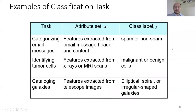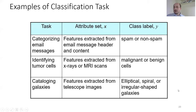Here are some examples of classification tasks. The first is categorizing email messages — attributes are features extracted from the email header and content, and the class output is whether the email is spam or non-spam. Another example is identifying tumor cells — attributes are features extracted from X-ray and MRI scans, and the output is whether the tumor cell is malignant or benign. A third example is cataloging galaxies — features from telescope images are the attributes, and the class label can be elliptical, spiral, or irregular shaped galaxies.